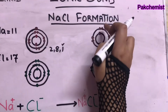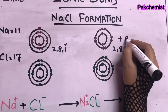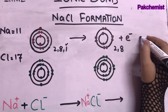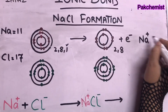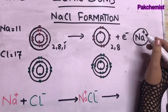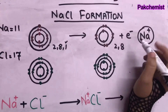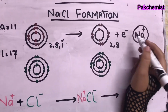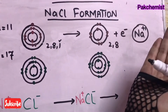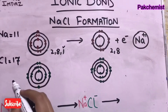After losing the one electron, Na is left with 2 electrons in the first shell and 8 electrons in the second shell. Because it lost one electron, the charge becomes +1 — it forms the sodium cation, Na⁺. If it lost two electrons, the charge would be +2.